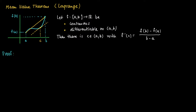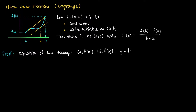The proof goes as follows. We will exploit Rolle's theorem, which we derived before. First, we look at the equation of the line through (a, f(a)) and (b, f(b)) — the yellow line segment. This is given by y minus f(a) equals the slope f(b) minus f(a) divided by b minus a, times x minus a.